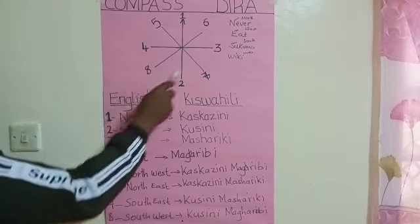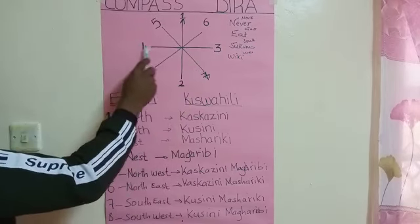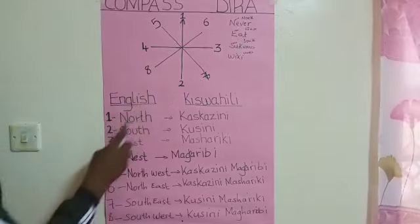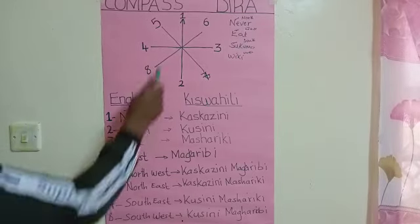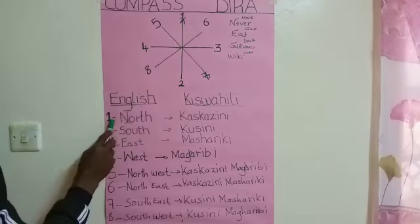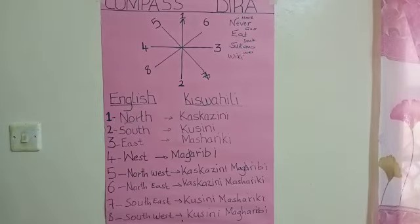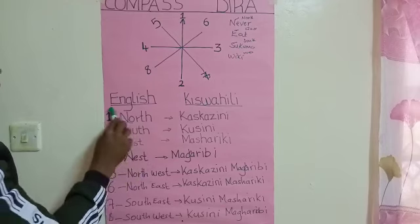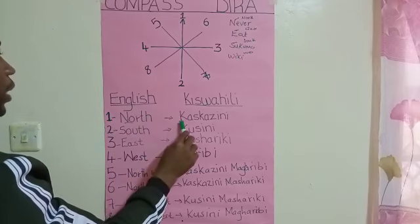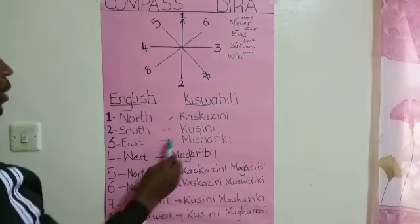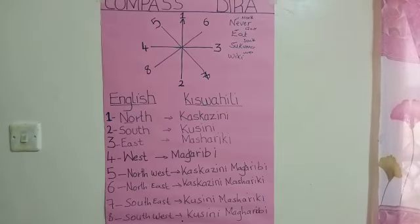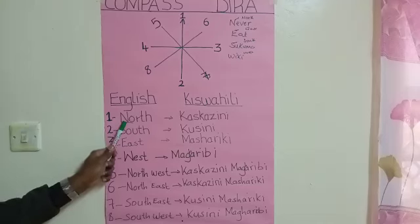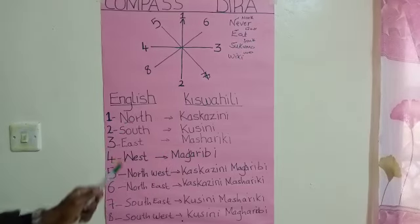I've numbered one through eight. Number one is North. In Kiswahili, nambari ya kwanza — number one — which is North in English, in Kiswahili is 'kaskazini.' So therefore, north in English, Kiswahili is 'kaskazini.' We can repeat together: north — kaskazini. I believe wherever you are, you have repeated and you can never forget that.